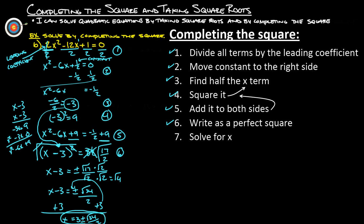That's how we solve by completing the square. The answer is three plus or minus the square root of thirty-four over two — not pretty, but doable. That's all for completing the square and taking square roots. There will be a second video with more examples. If you have any questions, please feel free to ask.